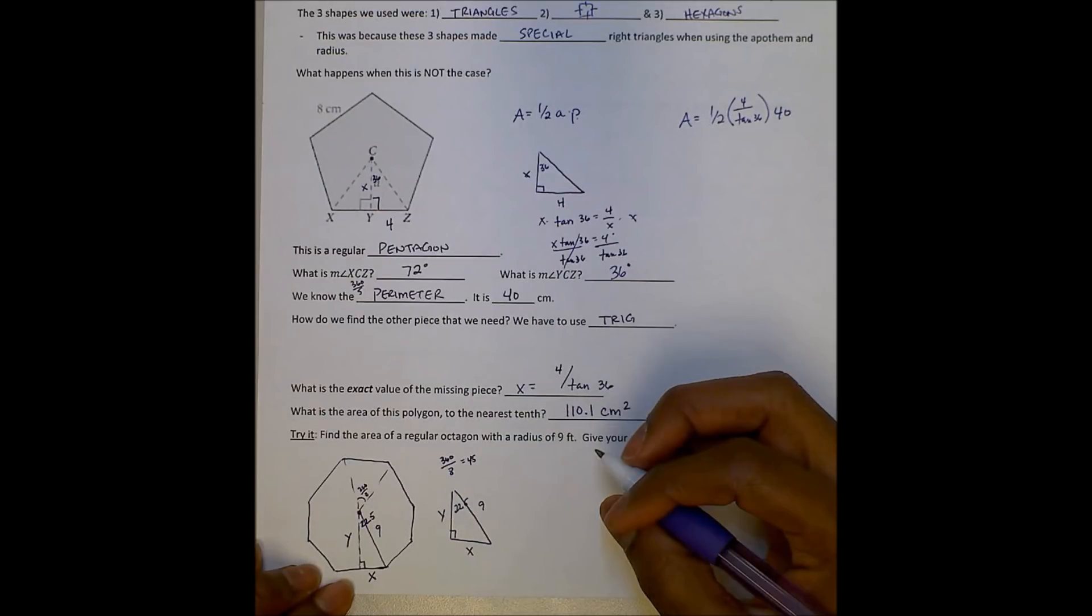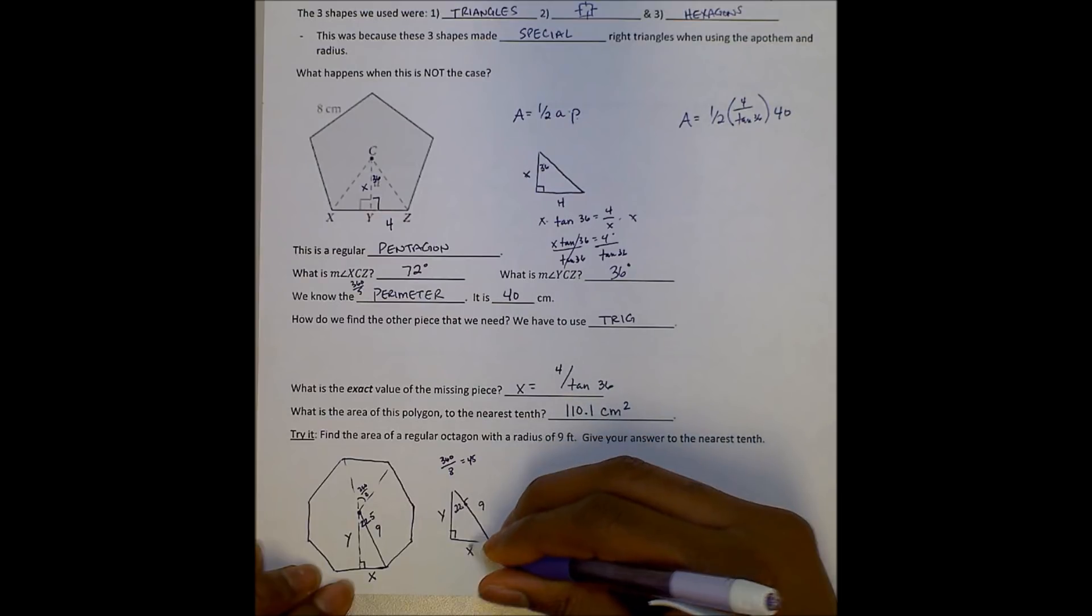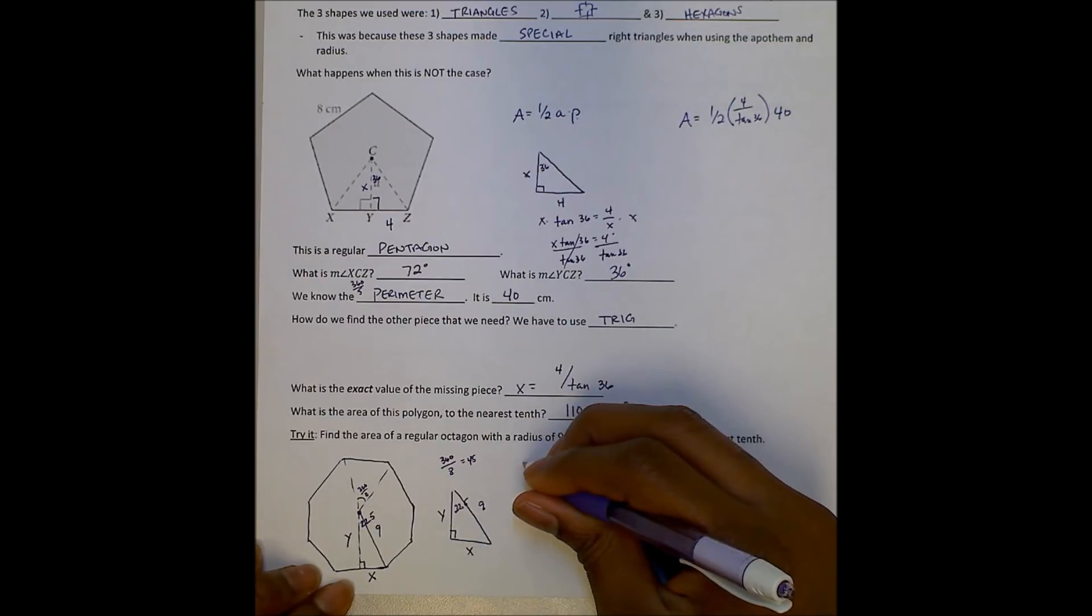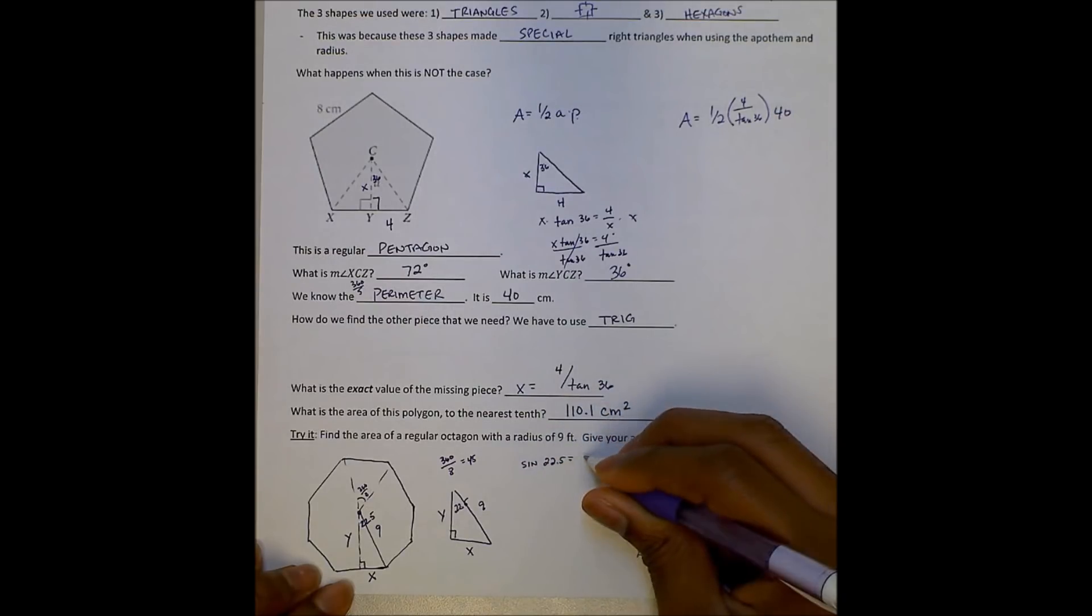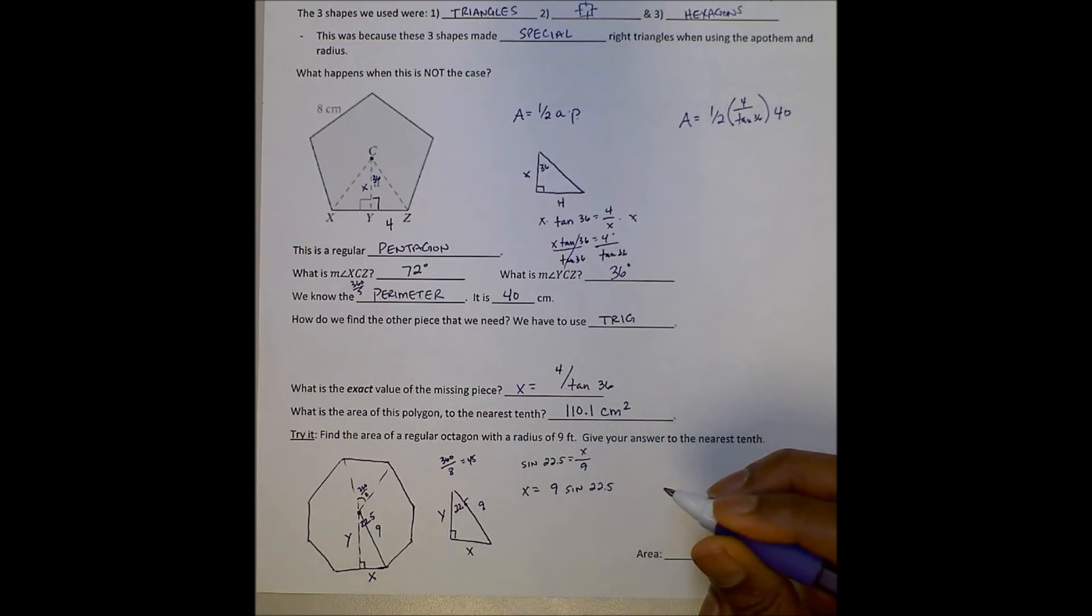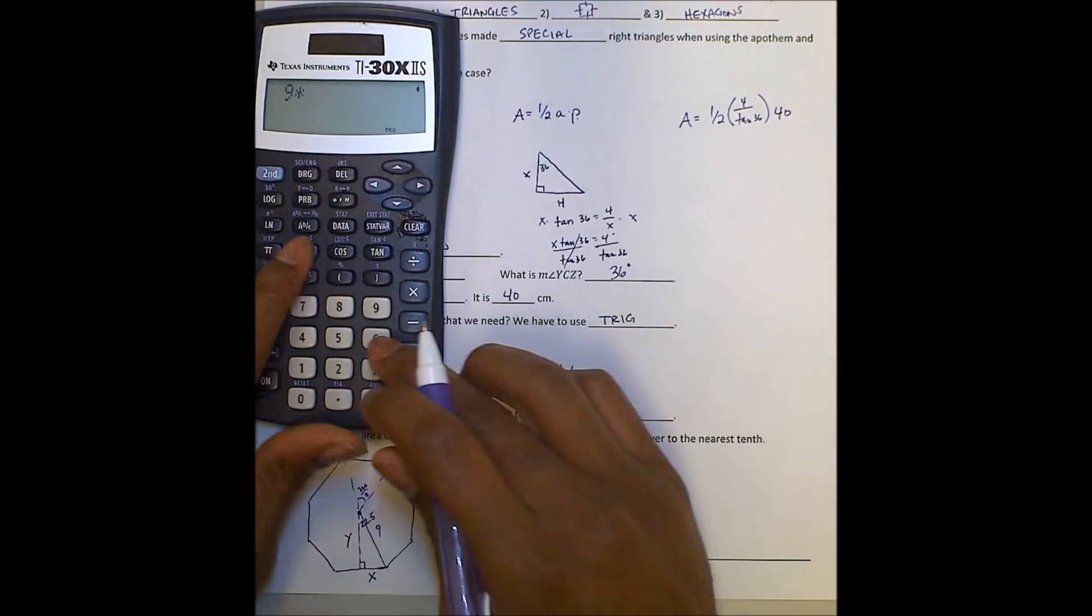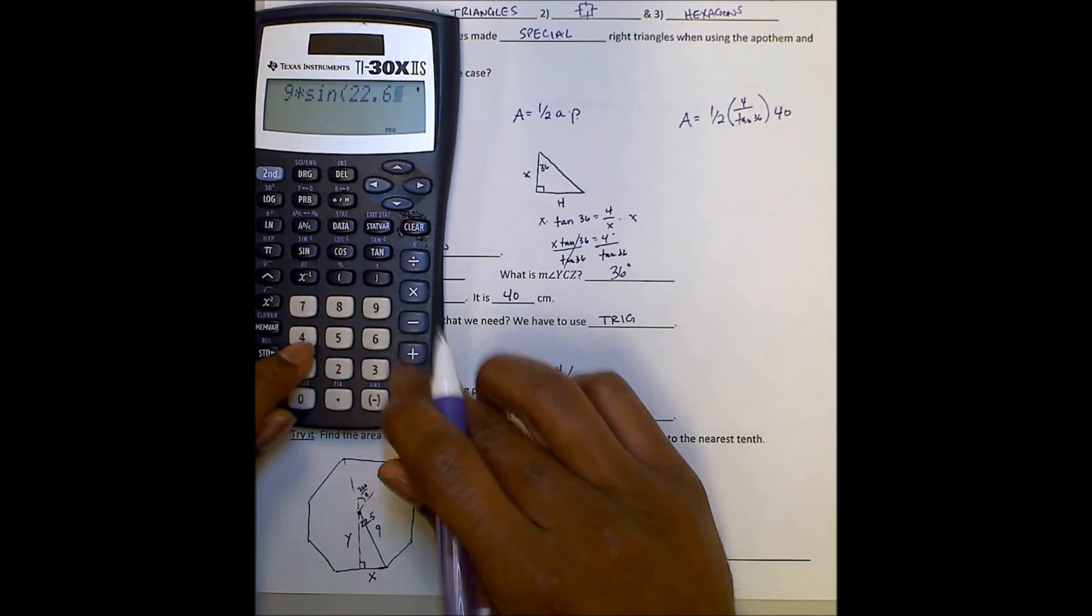So I'm using 9 times sine 22.5. So I'm going to find out what that is, 9 times sine 22.5.